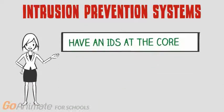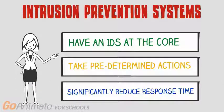Intrusion prevention systems are very similar to intrusion detection systems with one very important difference. Intrusion prevention systems can actually take predetermined actions to immediately respond to potential attacks without waiting for a user to look at an alert and decide what action to take. Intrusion prevention systems therefore dramatically decrease response time to potential threats and can prevent damage or data loss from taking place. These actions are based on specific rules created by the user, so it is only as good as the user — it doesn't think for itself.